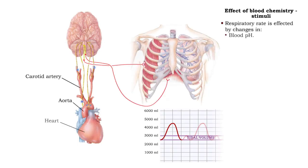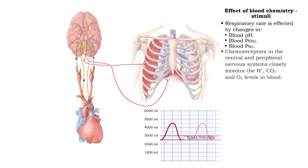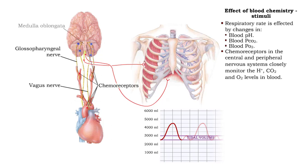Changes in blood pH, partial pressure of carbon dioxide, and partial pressure of oxygen have profound effects on respiratory rate. Chemoreceptors in the central and peripheral nervous systems closely monitor the hydrogen ion, carbon dioxide, and oxygen levels in blood.